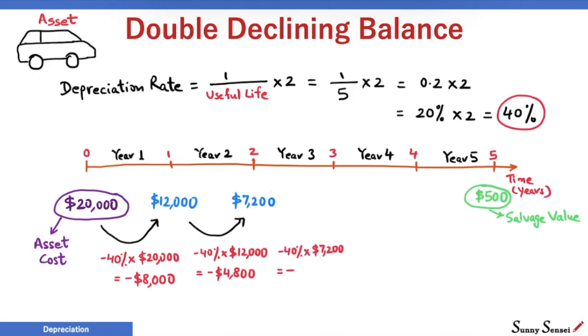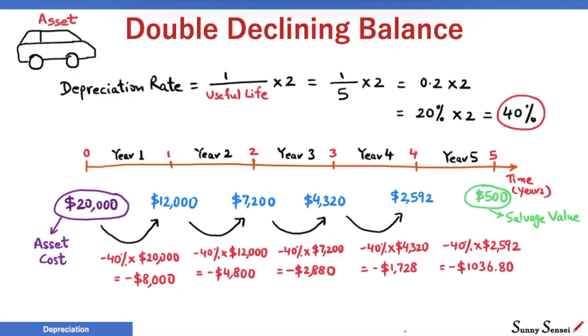In a similar fashion, the asset value reaches $2,592 at the end of fourth year. If we apply 40% depreciation rate, the change has to be minus $1,036.80. $2,592 minus $1,036.80 will give $1,555.20, the value at the end of year 5.